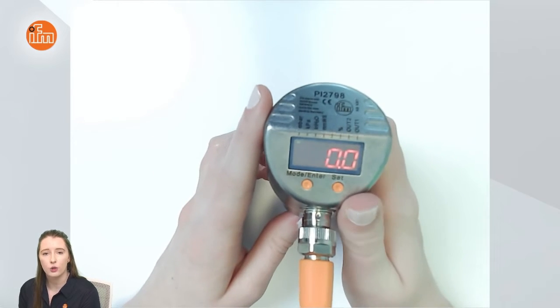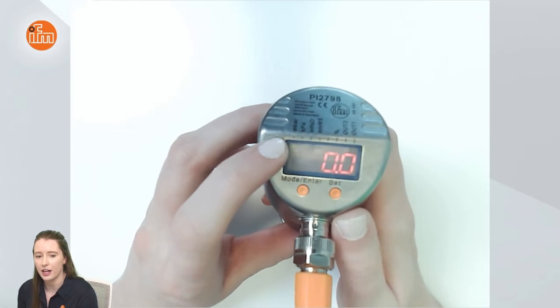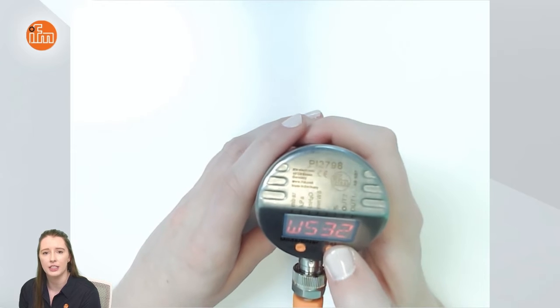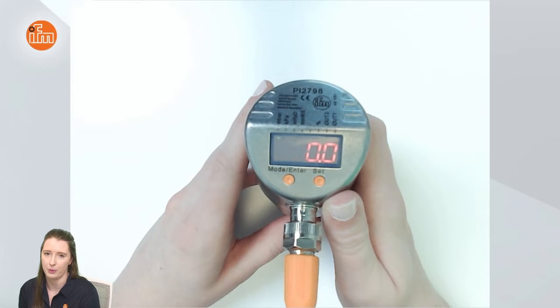Out of the box this unit is factory set to display in millibar as you can see with the LED indication on the display and I'm going to take you into the menu and show you how to manually program it for a different unit using the display and push buttons.